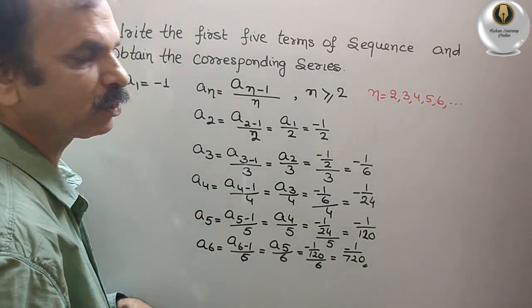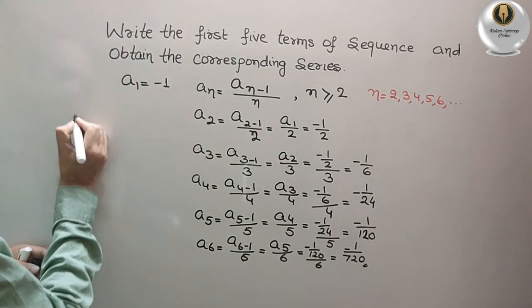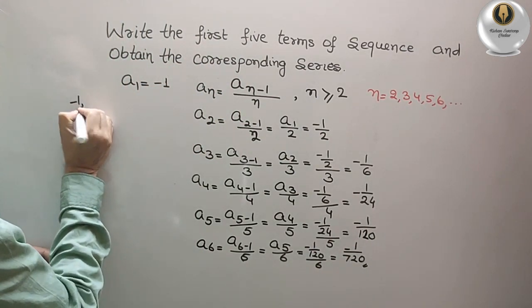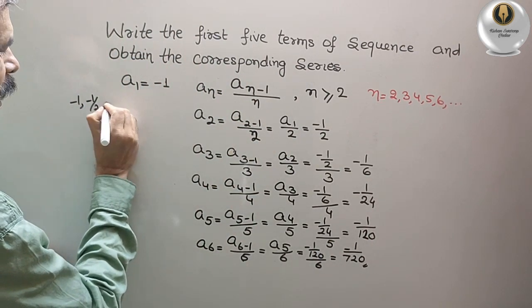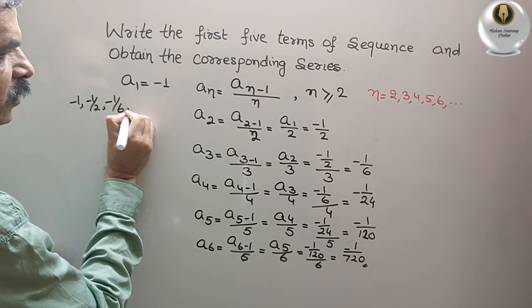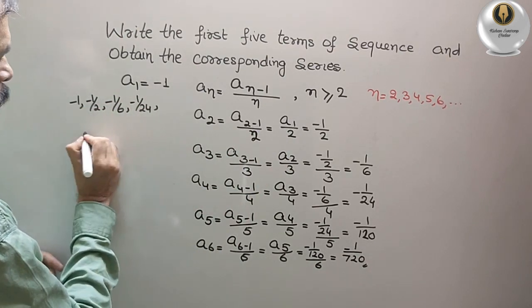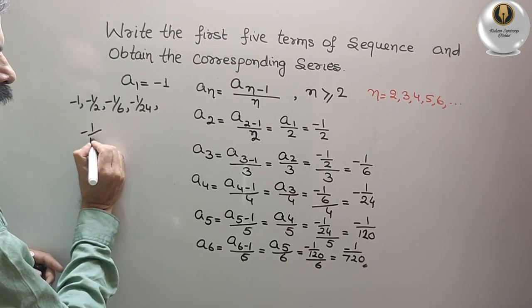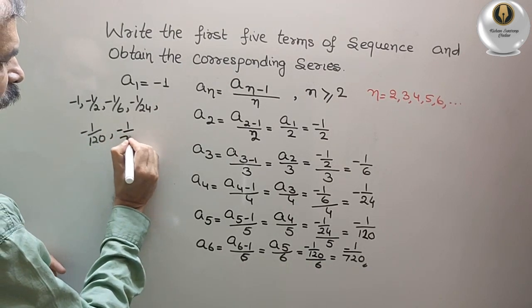So like this you have to find out the series. Therefore, our series is minus 1, minus 1 by 2, minus 1 by 6, minus 1 by 24, minus 1 by 120, minus 1 by 720.